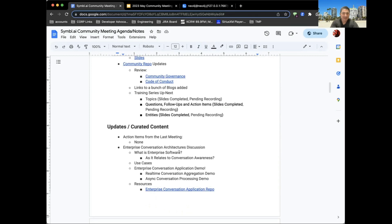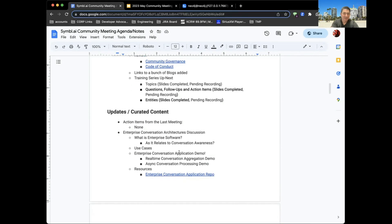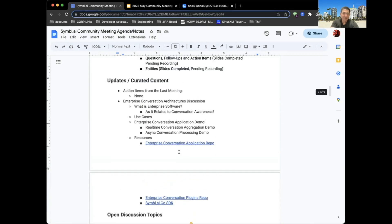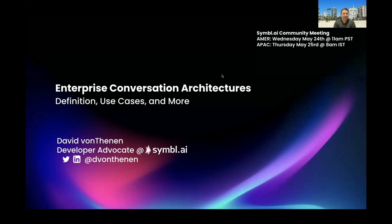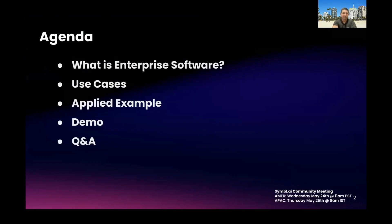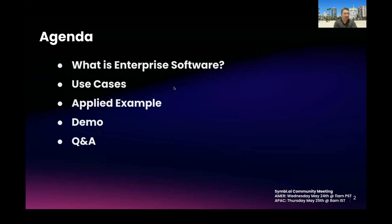For updates and curated content, we had no action items from the last meeting. Since there's nothing in the discussion section today, the topic for this month is enterprise conversation architectures and applications. We're going to talk about definitions — what is an enterprise application — use cases, examples of what a typical enterprise conversation application looks like, a couple of demos, and then Q&A.